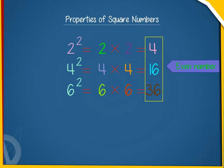Property 2: If a number is even, its square will be an even number. Otherwise, it will be an odd number. For example, 4² equals 16 (even) and 7² equals 49 (odd).